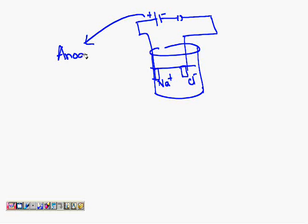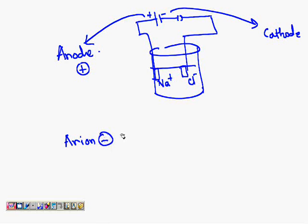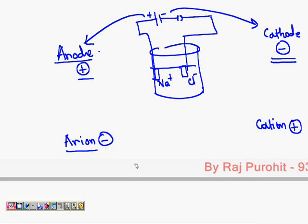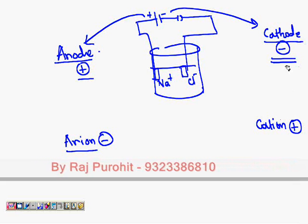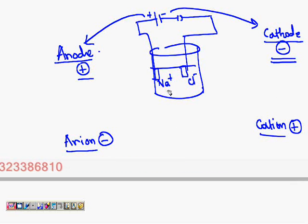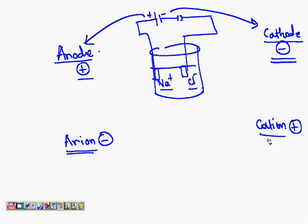The positive electrode we call the anode, and the negative electrode we call the cathode. Remember, for anion and cation it is opposite: anode is the positive electrode, and anion is the negative ion. Cathode is the negative electrode, and cation is the positive ion. In this case, out of Na⁺ and Cl⁻, Na⁺ is the cation and Cl⁻ is the anion.